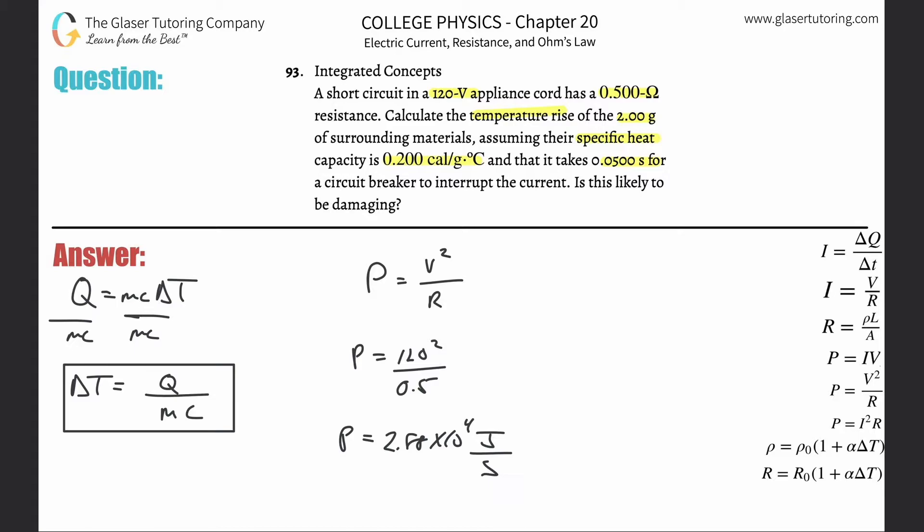Watts. This is a joule per second. This tells us that this is the amount of energy supplied every single second. How many seconds is energy being input into this wire? It takes 0.05 seconds for the circuit breaker to interrupt the circuit. I now simply take this value and multiply by 0.05 seconds. Notice how the seconds cancel. Multiply by 0.05 and it comes out to about 1.44 times 10 to the 3rd joules.